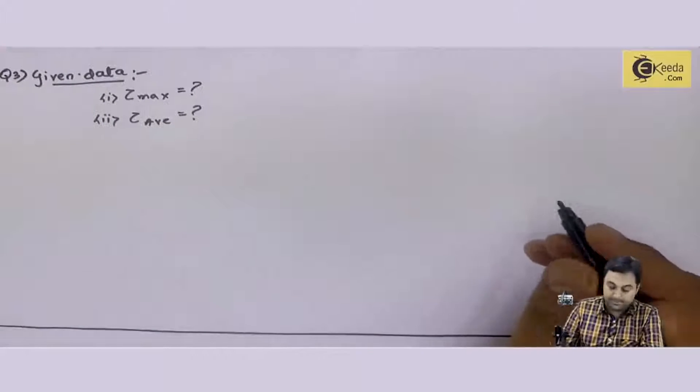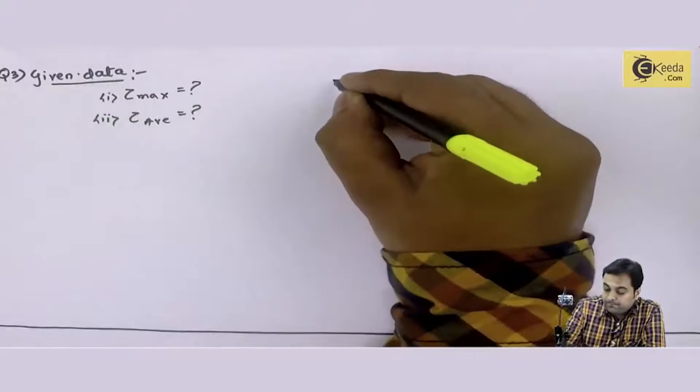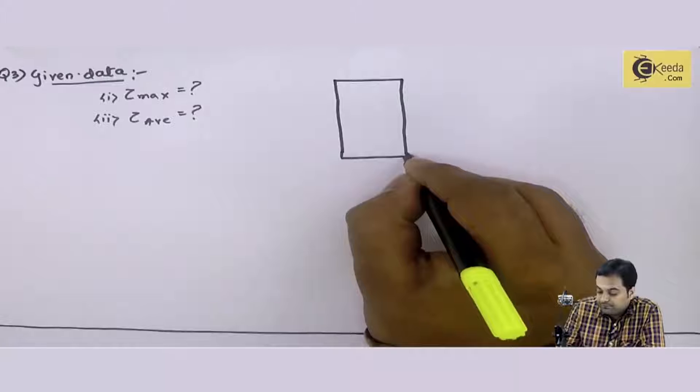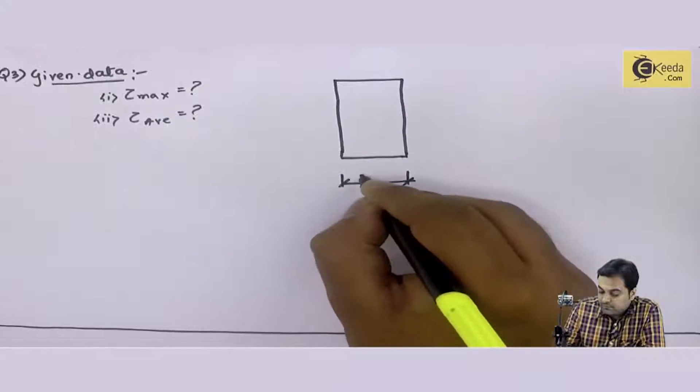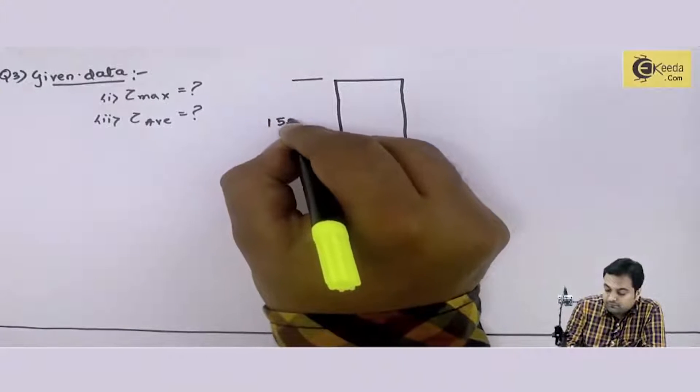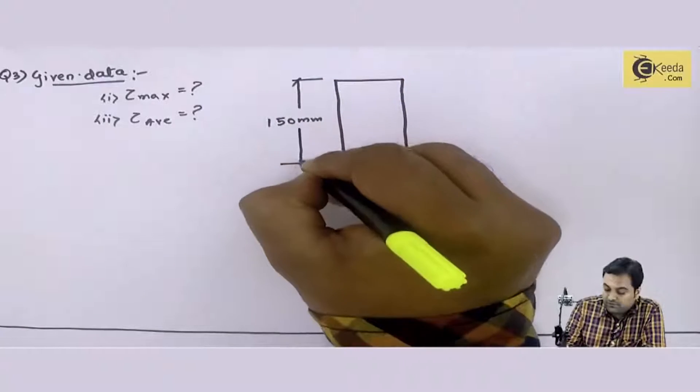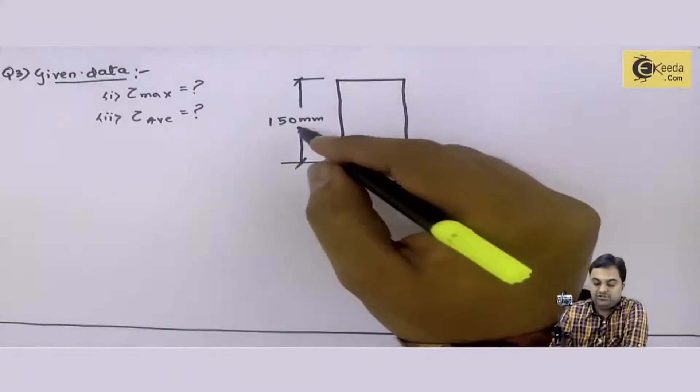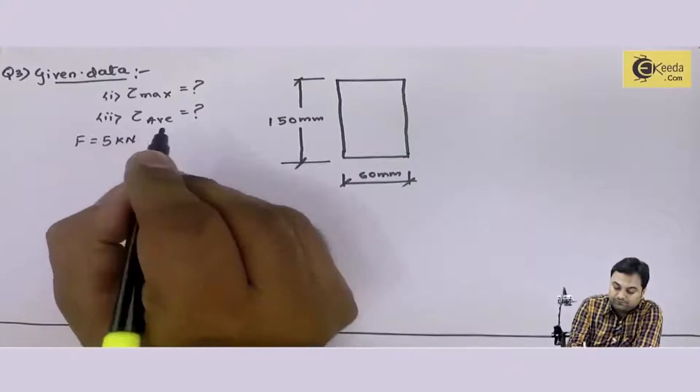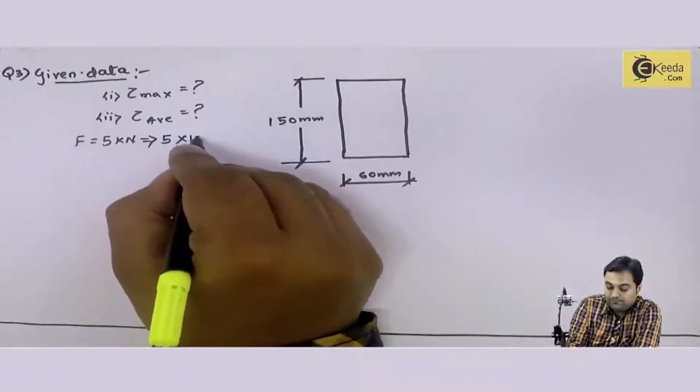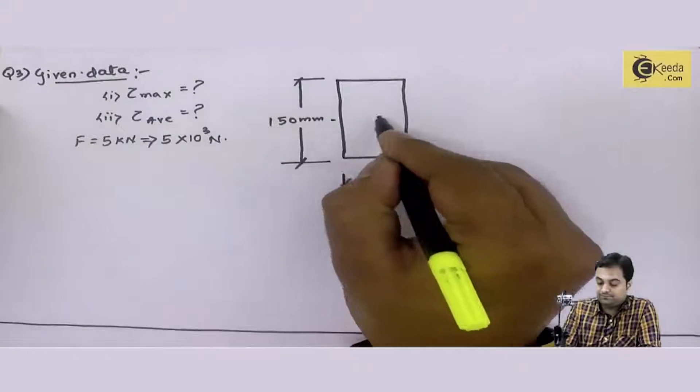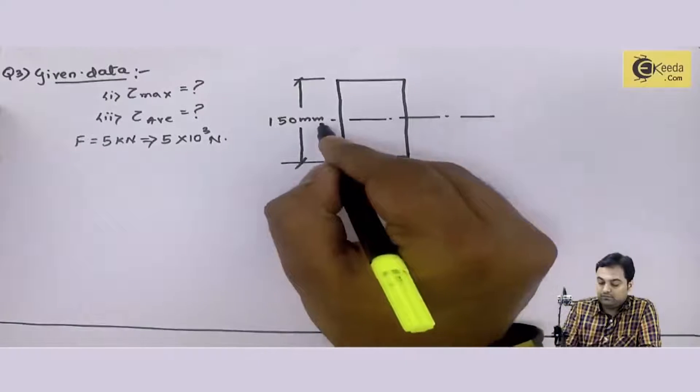I will draw this. Cross section is 60 into 150, both are in mm. The shear force is given as 5 kilo Newton. Now here we have to calculate what is tau max and tau average. This is the neutral axis.